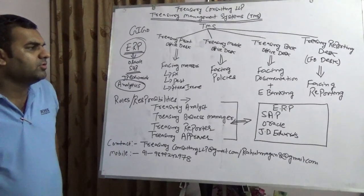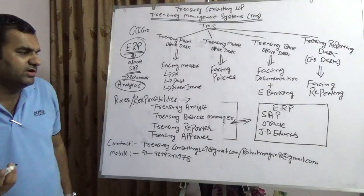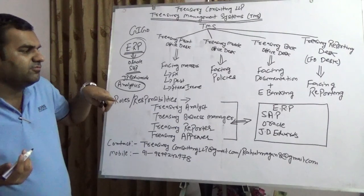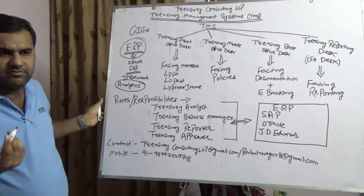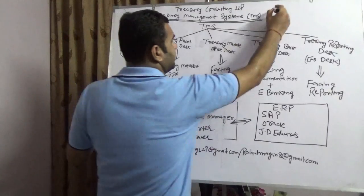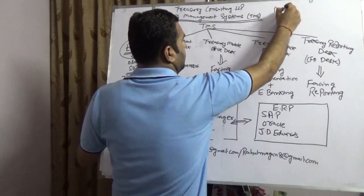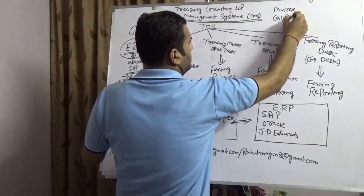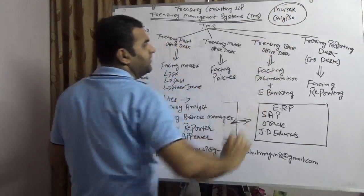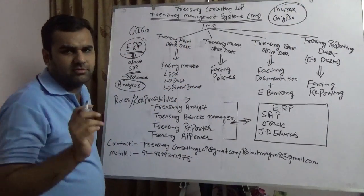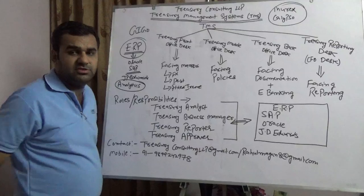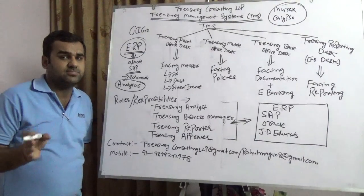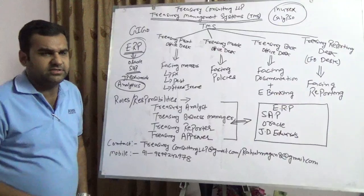I hope you have heard about ERP — Enterprise Resource Planning. You must have also heard about Murex and Calypso. These two are the best treasury management systems across the globe, and believe me, the valuation of these two is more than 2 million dollars per license per year.